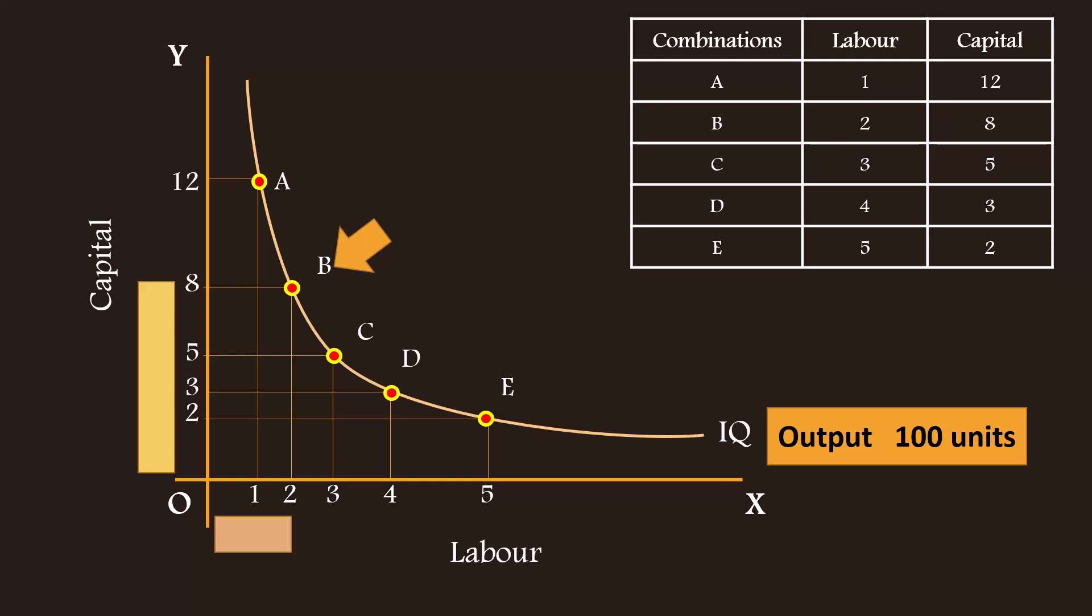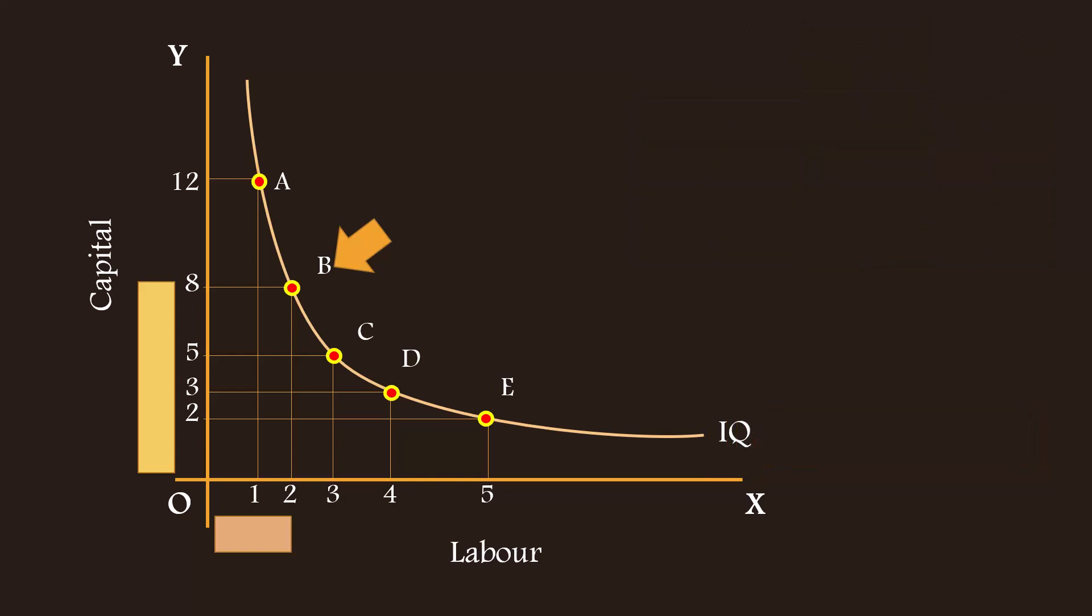But he increases the labor by 1 unit. It in turn increases the output by 10 units. The fall in output, 10 units, is exactly matched by the increase in output, 10 units. So, when the producer moves down from point A to B along the curve, the total output remains the same level, i.e. 100 units. What is true between points A and B is equally applicable and true between any two points along the curve.